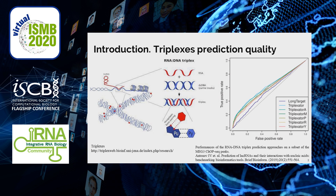Triplexes are triple helixes formed by RNA and a DNA duplex via Hoogsteen or reverse Hoogsteen interaction. Triplexes can be used via long noncoding RNAs to regulate gene expression. It's interesting to predict triplexes, but this is a very challenging task with great dependence on triplex parameters. Two of the existing tools for triplex prediction, LongTarget and Triplexator, do not show great prediction quality.